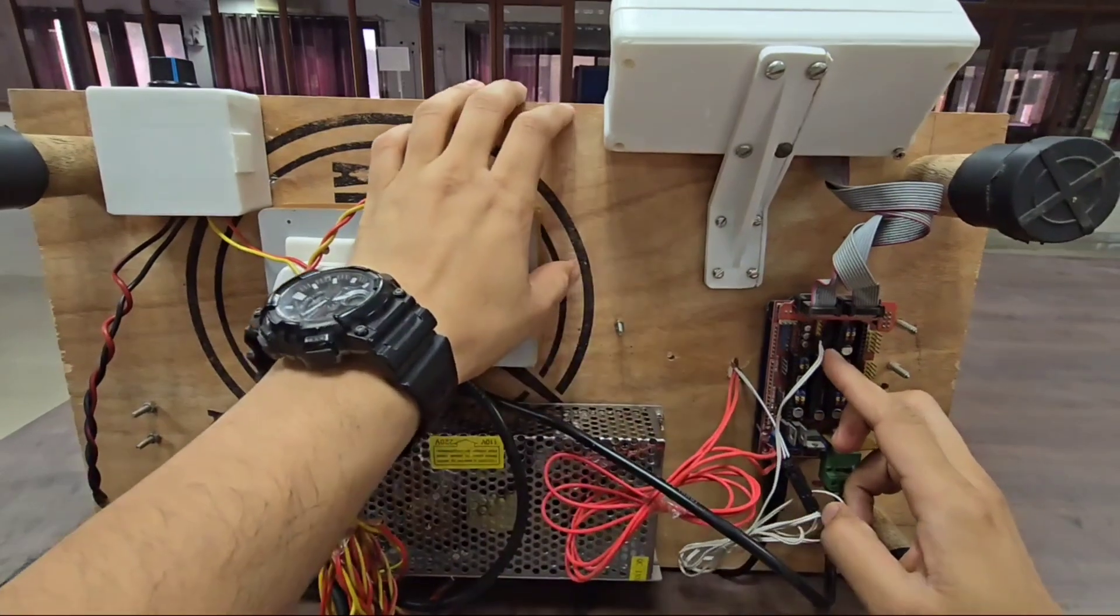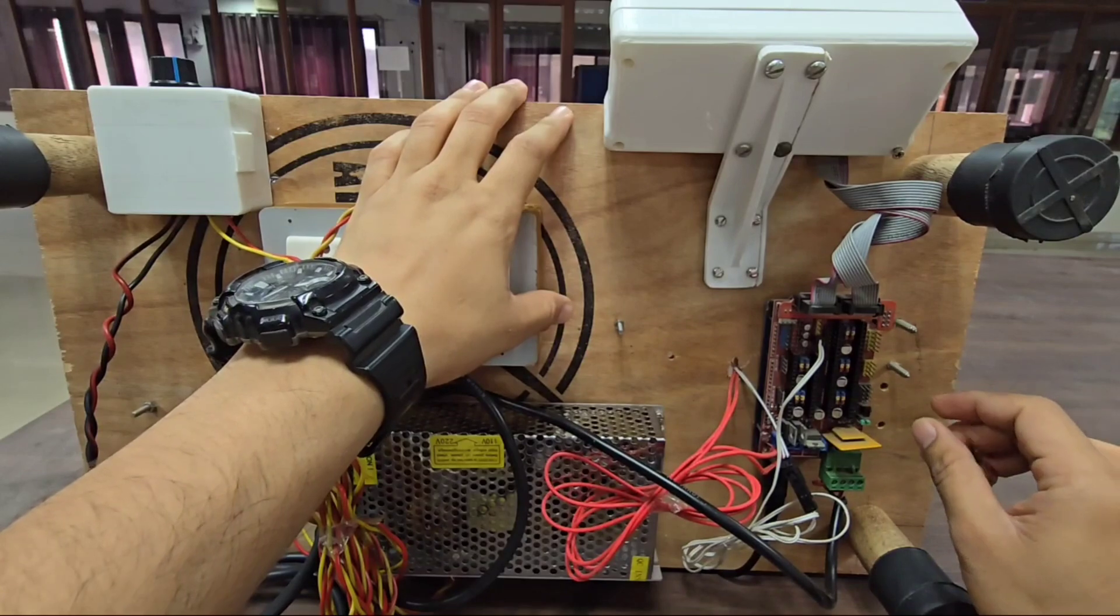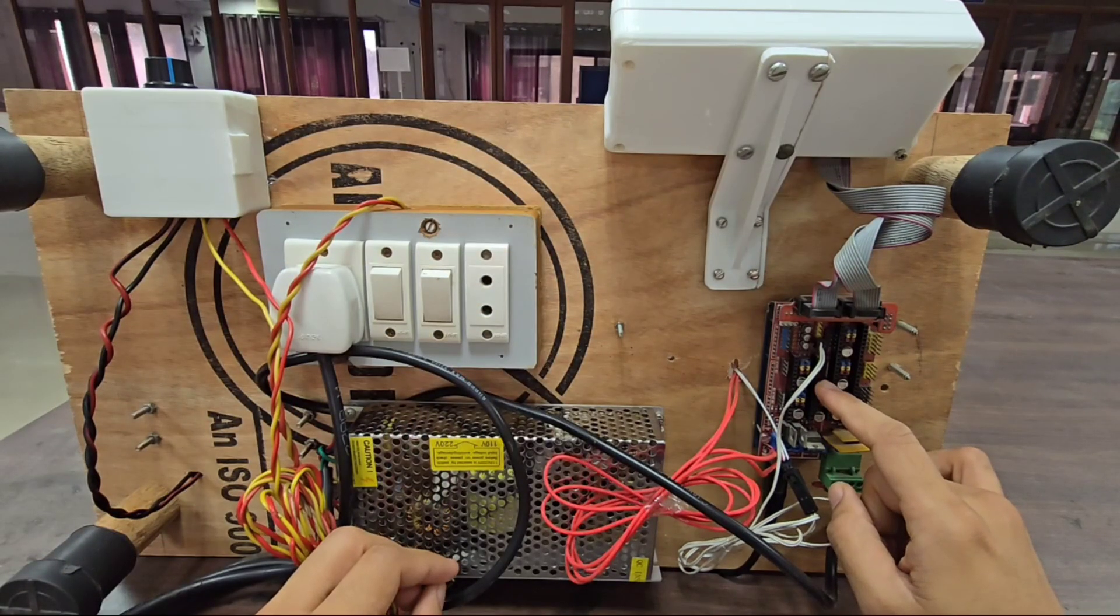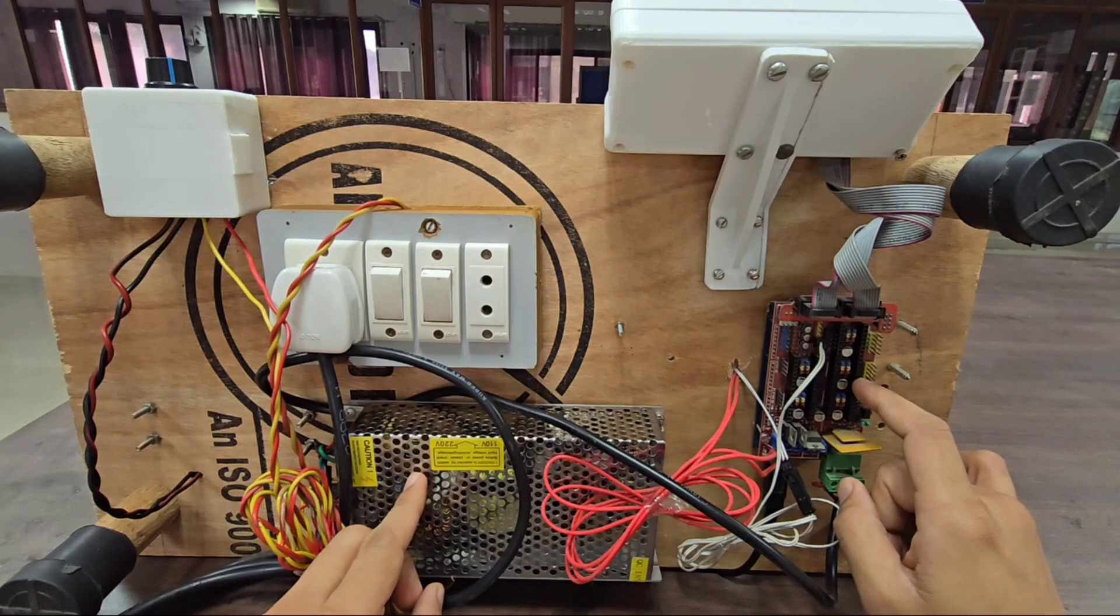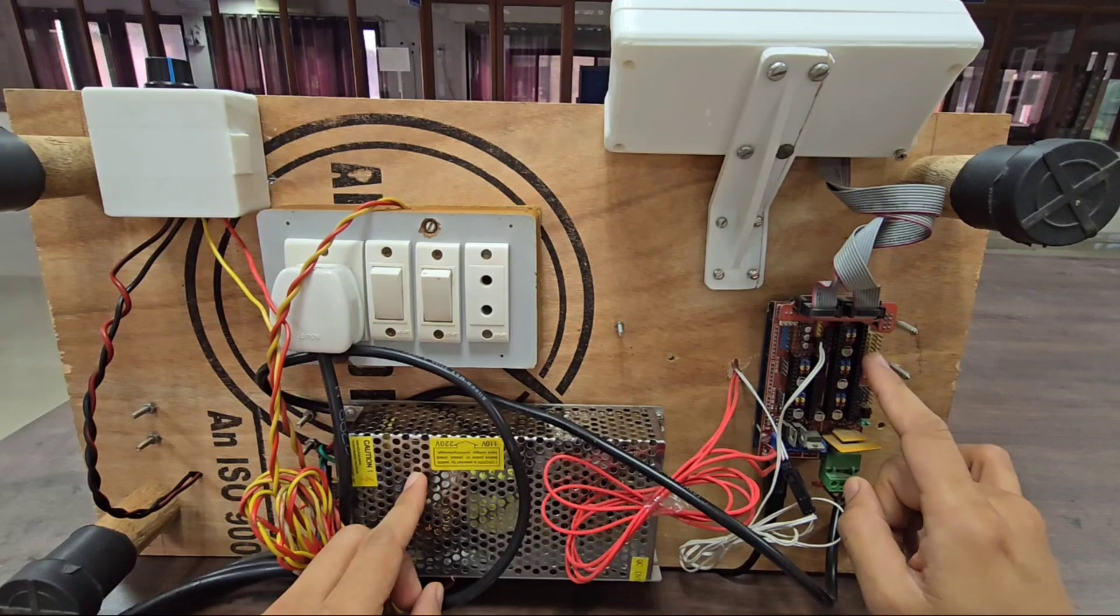This is connected directly to RAMPS 1.4 board as we connect in any 3D printer. Since RAMPS supports two extruders, if you're running your printer on RAMPS 1.4, you can use one for the PET filament making machine and the other for printing.